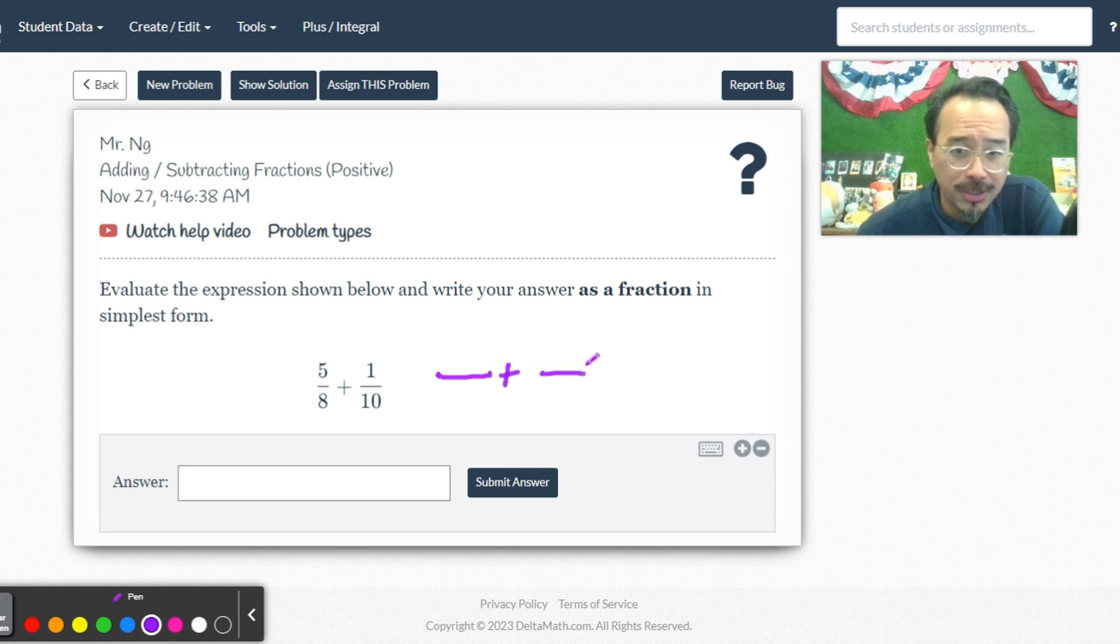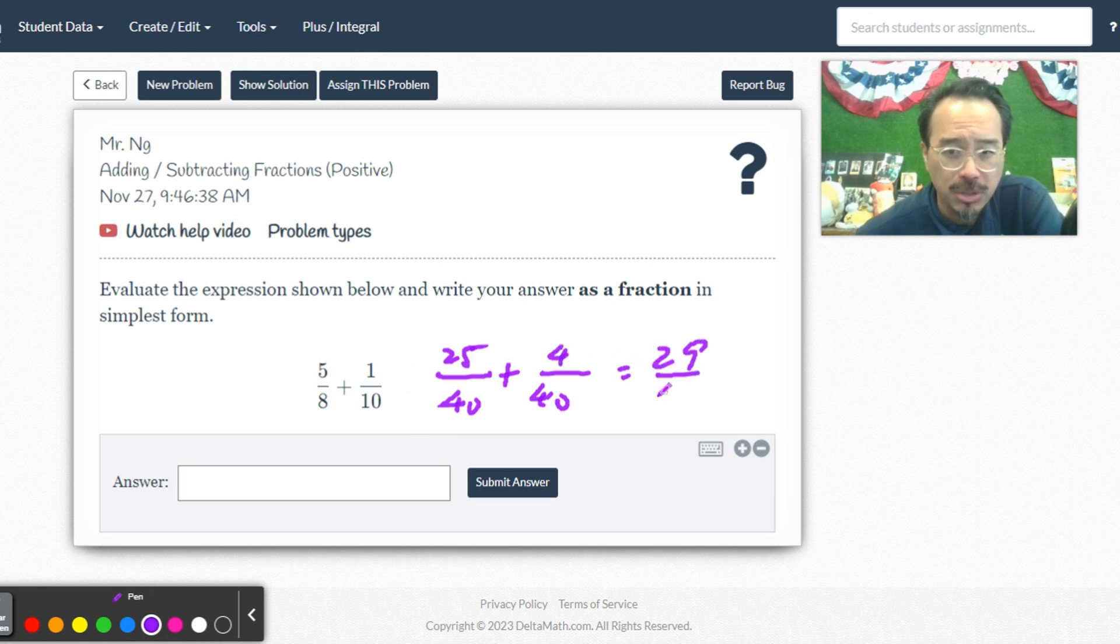So here we're going to find the common denominator first, which is 40, not 80. It could be 80, it doesn't change anything, you have to reduce it at the end though. So 8 times 5 is 40, so 5 times 5 is 25, 10 times 4 is 40, 1 times 4 is 4. So nice and easy, 29/40.